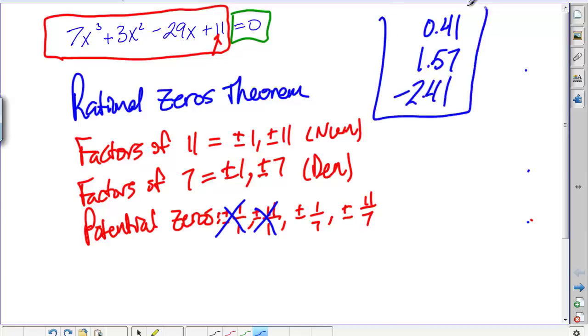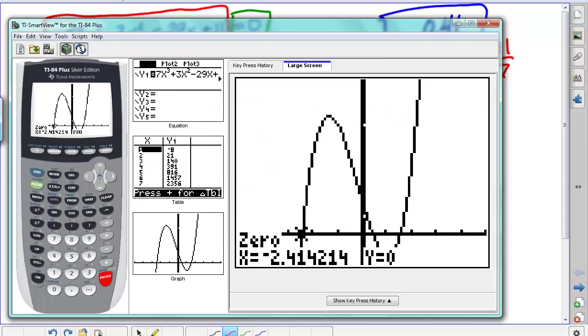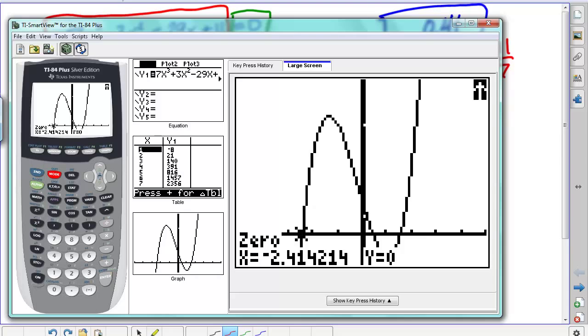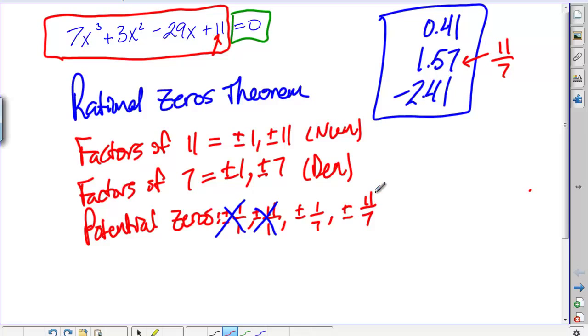So those are rounded, those are our zeros. For the homework, those rounded answers aren't gonna work, we gotta have exact values. But remember, we looked at 11 over 7 a second ago, we said 11 over 7 is 1.57, so we know that on the list is one of our zeros.